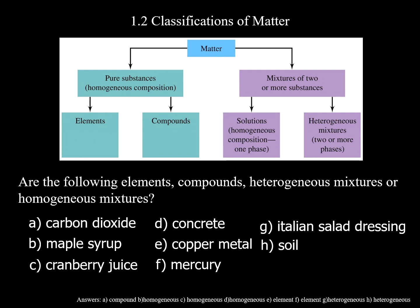Some classification questions: Carbon dioxide — is it a compound, element, heterogeneous mixture, or homogeneous mixture? It's a compound, CO₂. Maple syrup — homogeneous mixture; you usually only see one thing. Cranberry juice — that's debatable; you have the juice but sometimes you see flakes, so it can be homogeneous or heterogeneous. Concrete — heterogeneous, though also debatable since sometimes you see stones. Copper metal is an element (Cu). Mercury is an element (Hg). Italian dressing is a heterogeneous mixture. Soil is a heterogeneous mixture — you have bugs, rocks, etc.